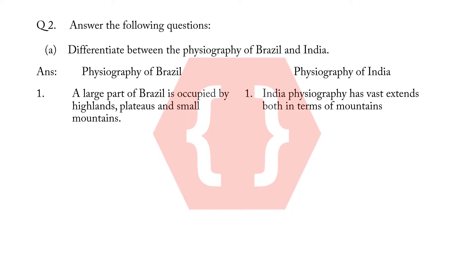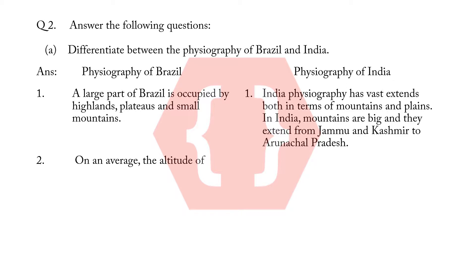1. India physiography has vast extends both in terms of mountains and plains. In India, mountains are big and they extend from Jammu and Kashmir to Arunachal Pradesh. 2. On an average, the altitude of the Brazil's mountain is between 500 to 1,000 meters.